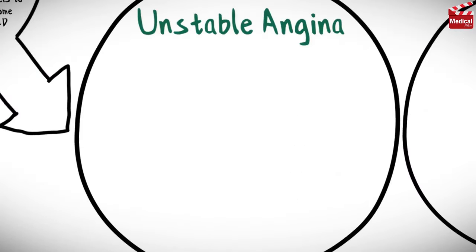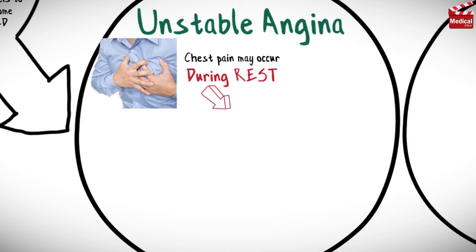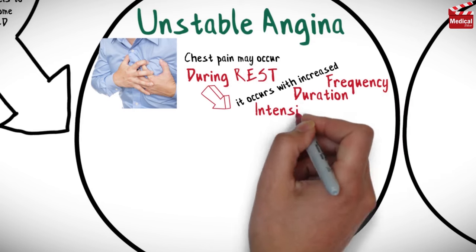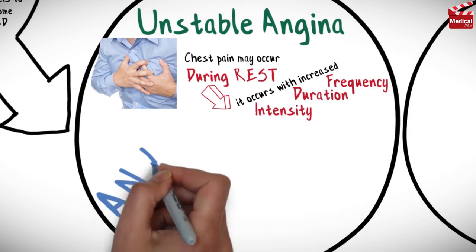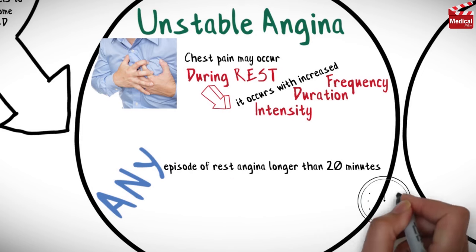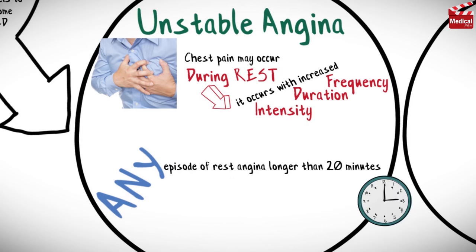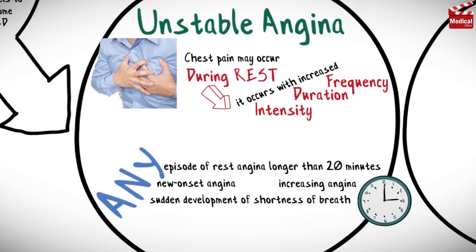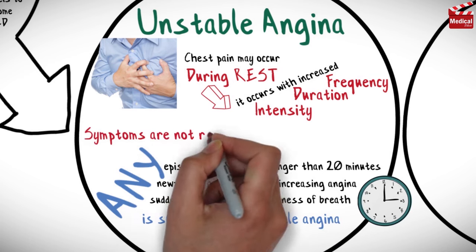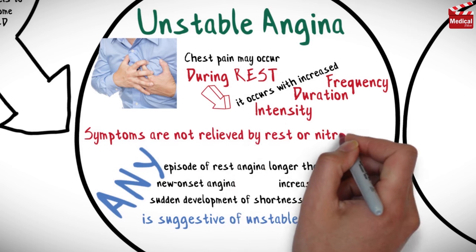In unstable angina, chest pain may occur during rest, with increased frequency, duration, and intensity. Any episode of rest angina longer than 20 minutes, any new onset angina, any increasing angina, or sudden development of shortness of breath is suggestive of unstable angina. Importantly, the symptoms are not relieved by rest or nitroglycerin.